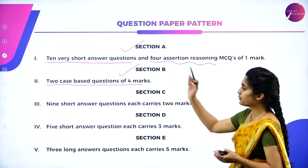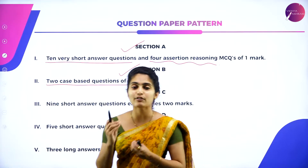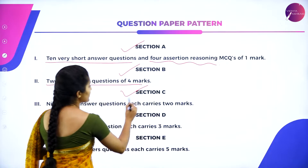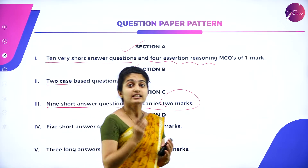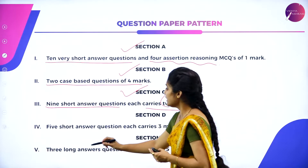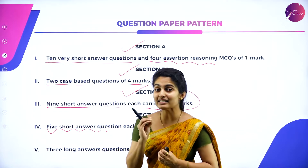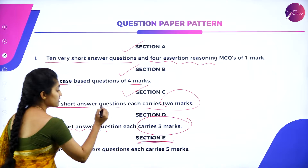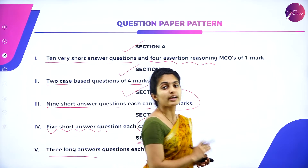Section C has 9 short answer questions, each carrying 2 marks — you must write answers worthy of 2 marks. Section D has 5 short answer questions, each carrying 3 marks. Section E, the 5th section, has 3 long answer questions, each carrying 5 marks, which require very detailed answers.